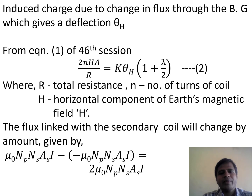From equation 1 of the 46th session we have 2N times H times A upon R. In that expression, B is replaced by H since we have taken the magnetic field as H. Therefore, 2NHA upon R is equal to K times theta H into bracket (1 plus lambda by 2). Let this be equation 2, where R is the total resistance, N is the number of turns of the coil, and H is the horizontal component of Earth's magnetic field.